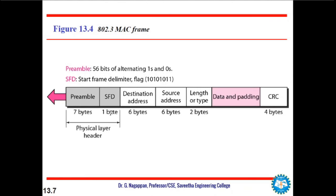Next is SFD, that is Start Frame Delimiter. This field is one byte, usually 10101011, and signals the beginning of the actual frame. The SFD warns the station or stations that this is the last chance for synchronization in case they are not synchronized.